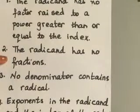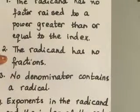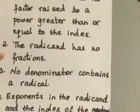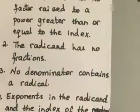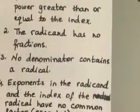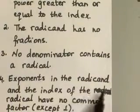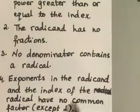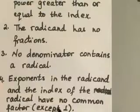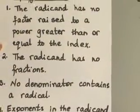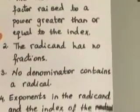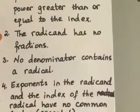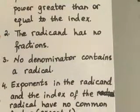Your radicand should have no fractions. If it does, use the quotient rule to simplify it. Your denominator must not contain a radical. And the exponents in the radicand and the index of the radical have no common factor. So these are four things that you will look for when you're trying to decide if your radical is in the lowest or simplified form or not.